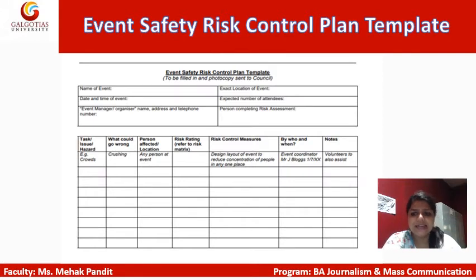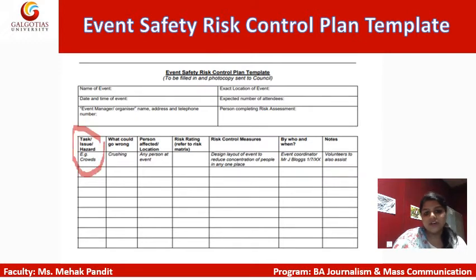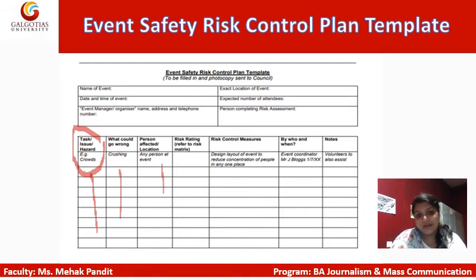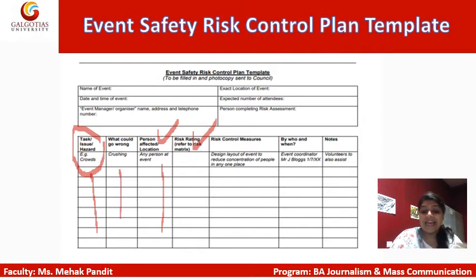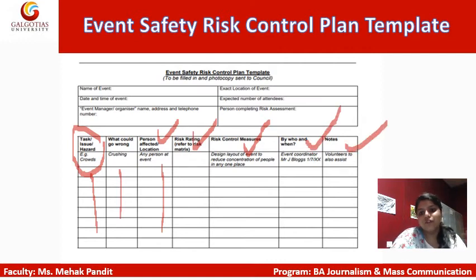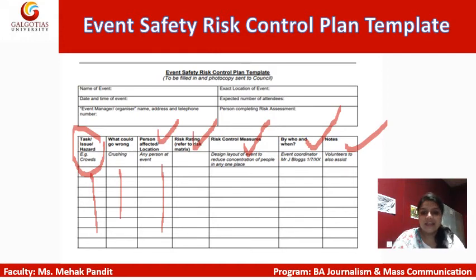The template also includes the kind of issues generally foreseen by the manager or the person doing the assessment — they name the type of task, what could go wrong, and who could be affected or impacted. Then the risk rating — high, medium, or low — is indicated, followed by the risk control measures that have been taken or can be taken, who is the person responsible for that particular control measure, and any additional notes. This is the template that is filled by the event management team or the risk assessment team to inform their decisions.